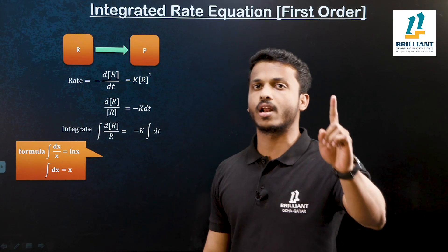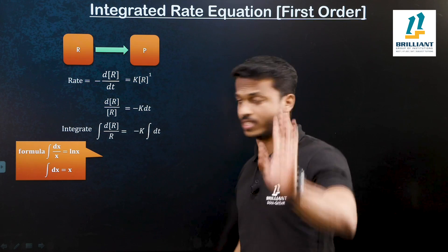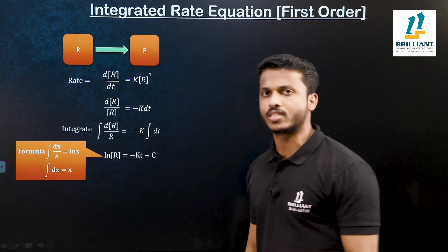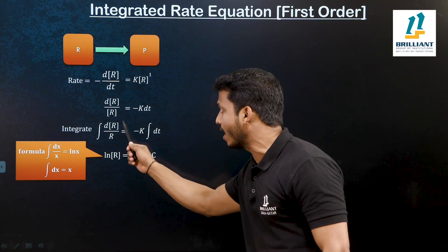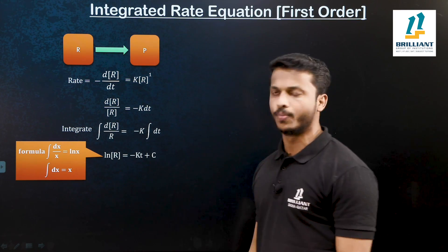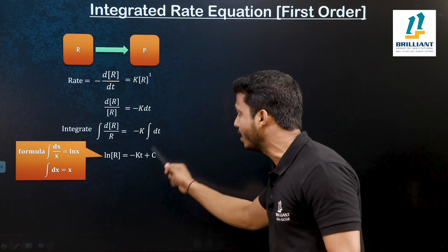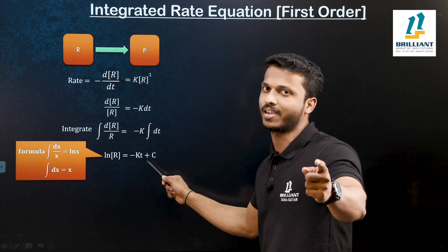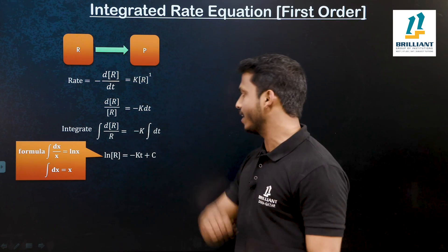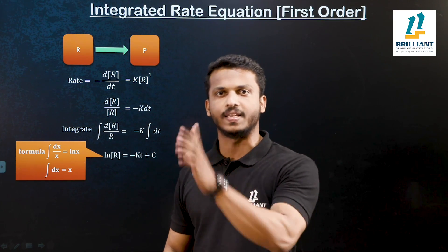Since integral of dx by x equals ln x, therefore integral of dR by R equals ln R. And since integral of dx equals x, therefore integral of dt equals t. After the integration you also get an integration constant, plus c. So after integration: ln R is equal to minus kt plus c.